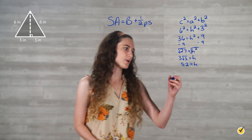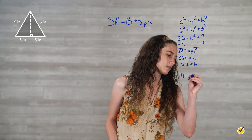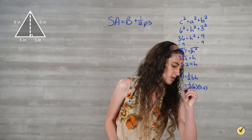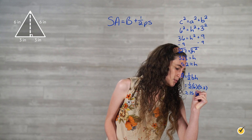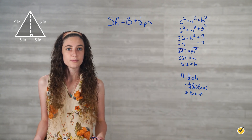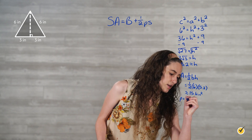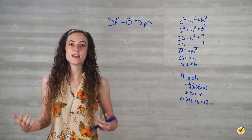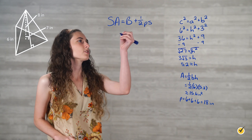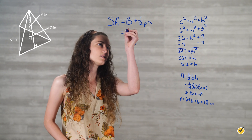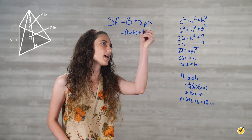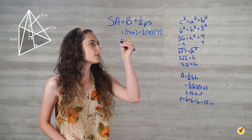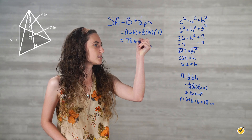Therefore, the area of the base is found using A equals one-half BH, where b equals 6 and h equals 5.2, which is approximately 15.6 square inches. The perimeter of the base equals all sides added together: 6 plus 6 plus 6, which equals 18 inches. Now to solve for surface area, we plug in these values: surface area equals 15.6 plus one-half times 18 times the slant height, which we were given as 7. This gives us approximately 78.6 square inches.